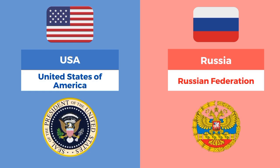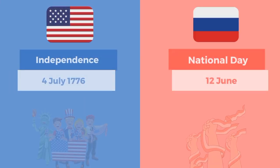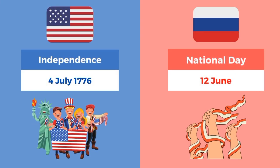USA is called the United States of America and Russia is called the Russian Federation. The Independence Day of the United States is 4th July 1776. On 12th June, Russia celebrates its National Day, originally known as Russia Independence Day.